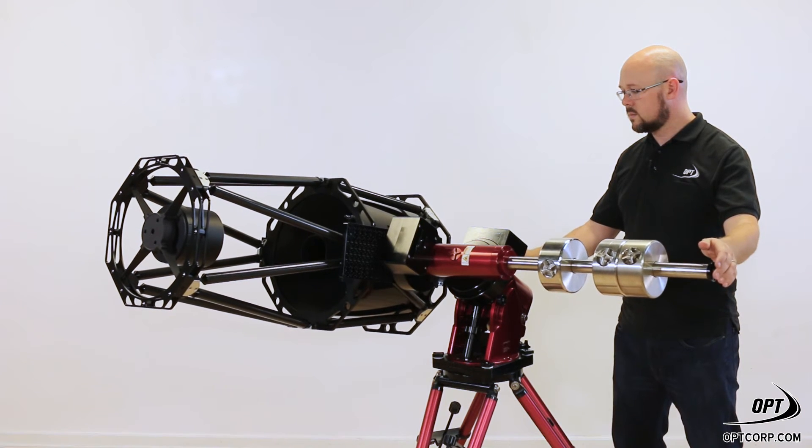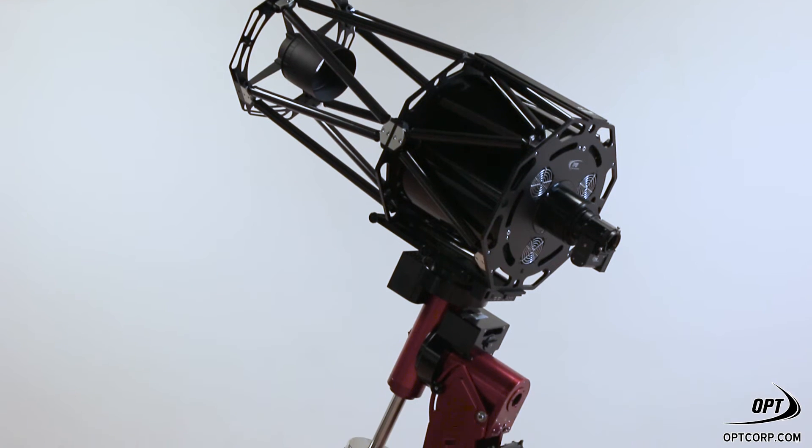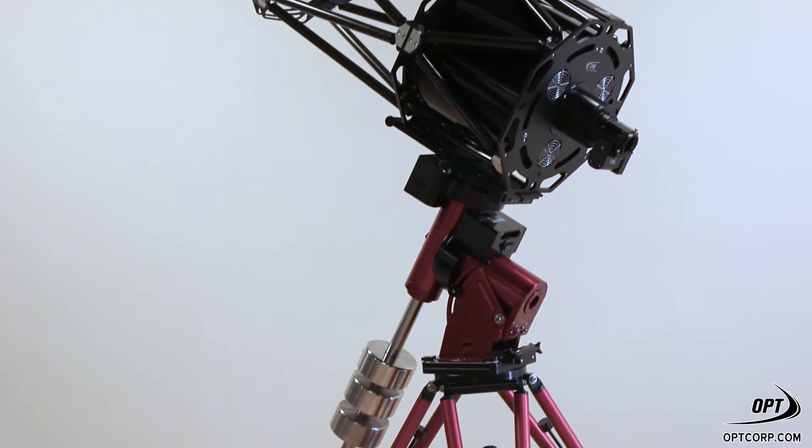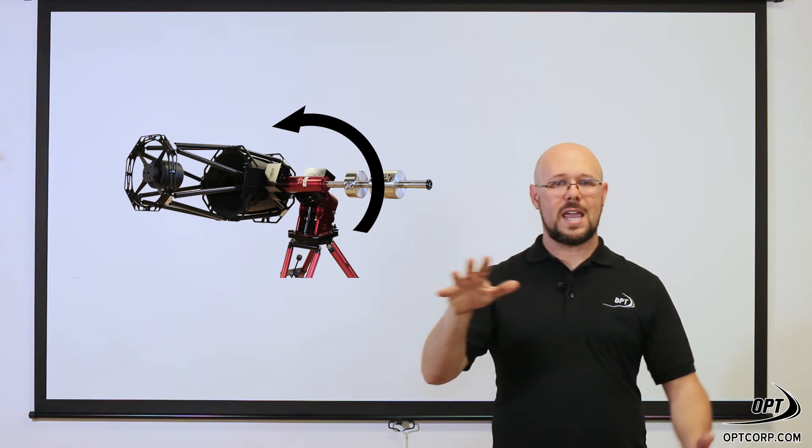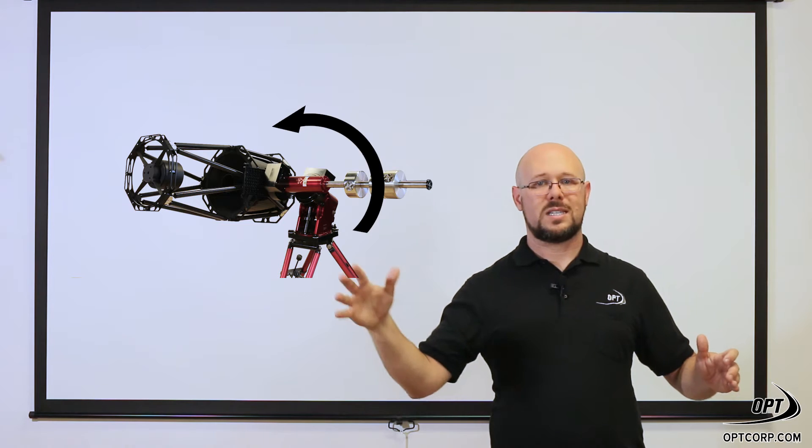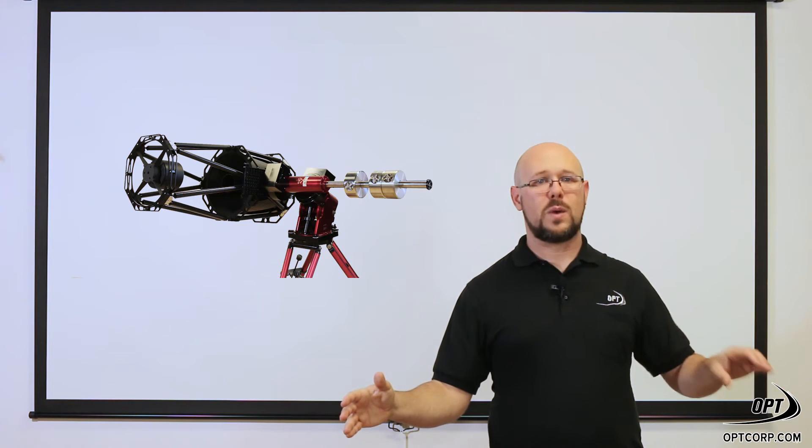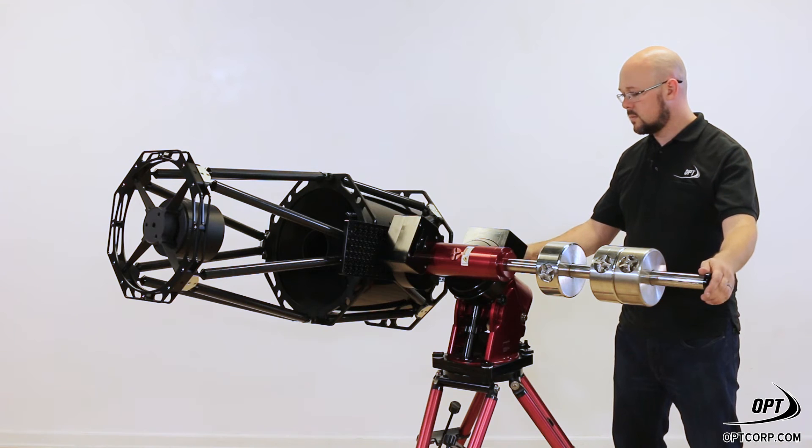When you're balancing the mount in RA, it's relatively simple. You take your mount with the telescope on top and the counterweights on the bottom. You rotate it to the side with the telescope on one side, counterweights on the other, and the counterweight bar parallel to the ground.